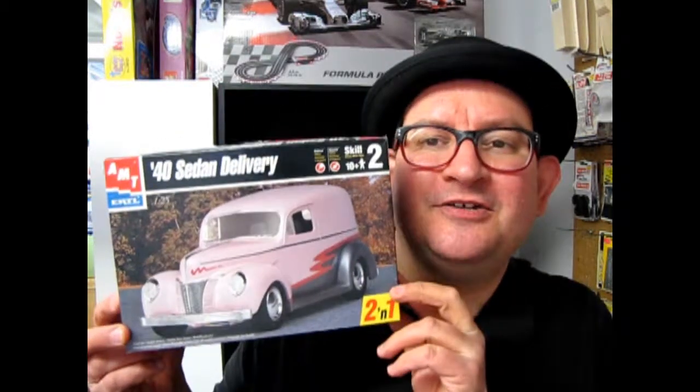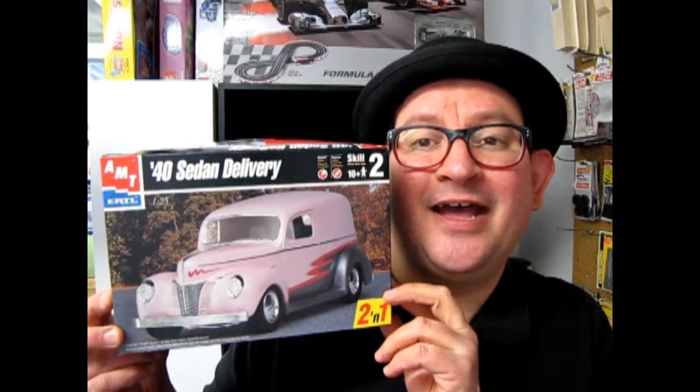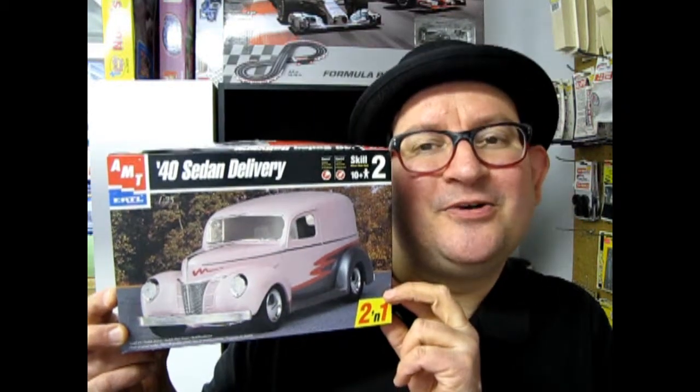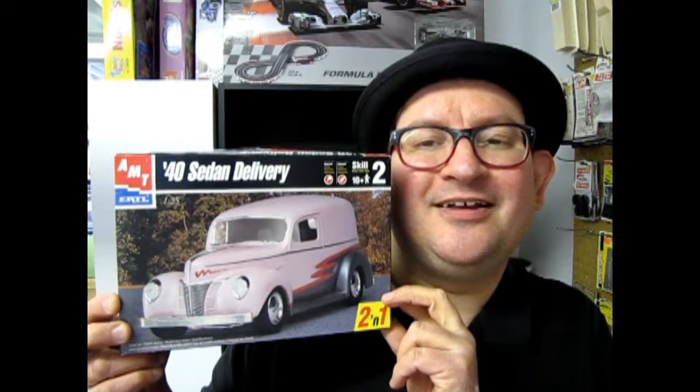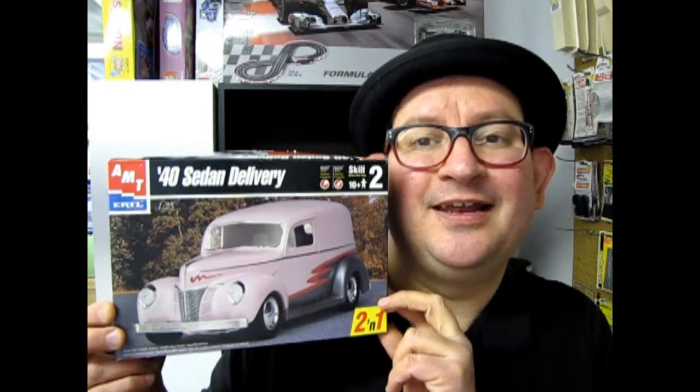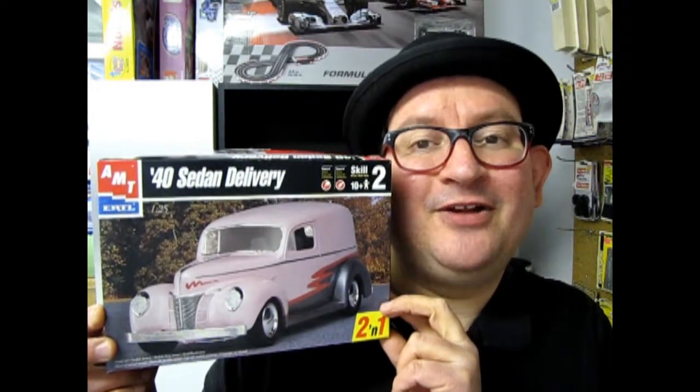Welcome back to another episode of the 1940s version of Monster Hobby's What's in the Box. We're going to be looking at the 1940 sedan delivery Ford kit from AMT. Don't let the pink and silver scare you off because we're going to take a look at what's underneath the lid right now. Let's go down to our bench and have a look.